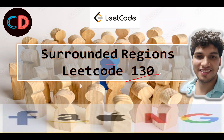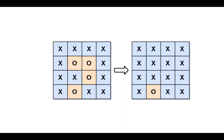Surrounded Regions — LeetCode 130. Let's take the example from the question: we are given a matrix of X's and O's, and we need to toggle those regions that are four-directionally surrounded by X. Let's look at both islands highlighted in yellow and draw their boundary coordinates. Note that diagonal elements are not considered as boundary coordinates — diagonal O's do not count.